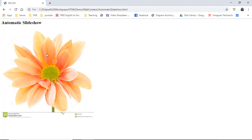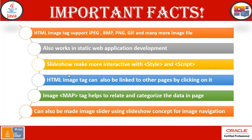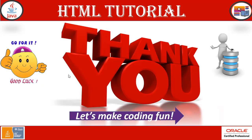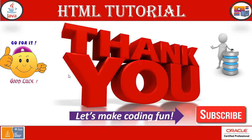Important facts: the HTML image tag supports JPG, BMP, PNG, GIF, and many more image file formats. It works in static web application development and offline applications. Slideshow makes the page more interactive using style and script. The image tag can also be linked to other pages using hyperlinks. Image map tags help relate and categorize data on the page. In the next session, we will learn about HTML video and hyperlinks in more detail. Thank you for watching — please subscribe and stay tuned. Let's make coding fun!